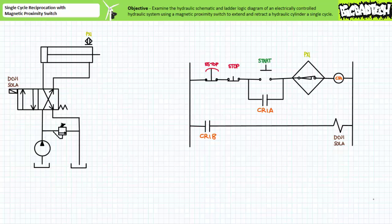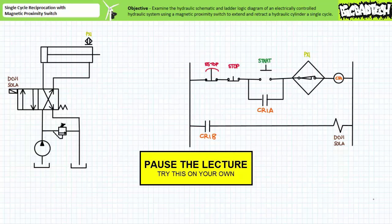For instance, if the rod is entering a caustic or hazardous environment like a nuclear reactor, these are environments that may damage the limit switch or present a region of space you do not wish to occupy while repairing it. By all means pause the lecture and give yourself a brief tour of both the hydraulic schematic and ladder logic diagram and see if you can predict how this system works.